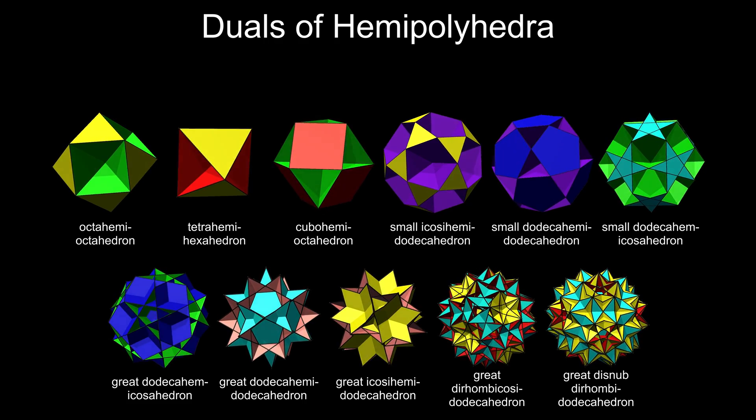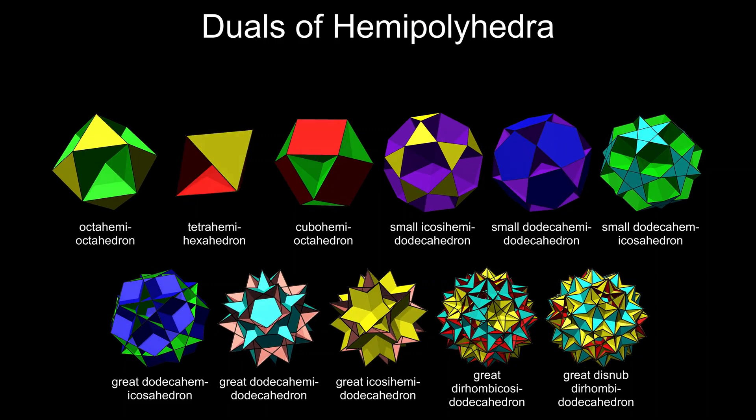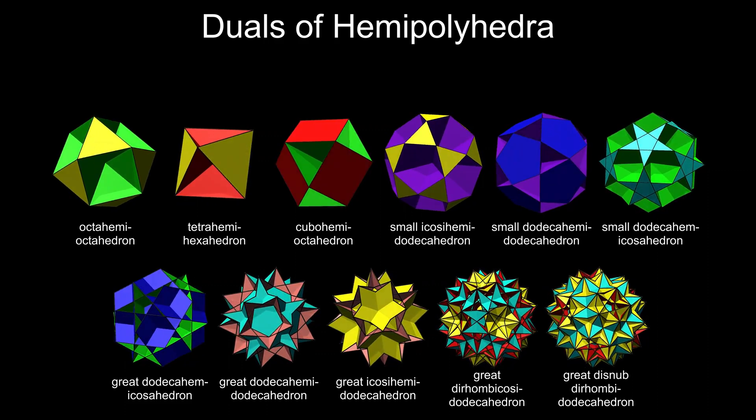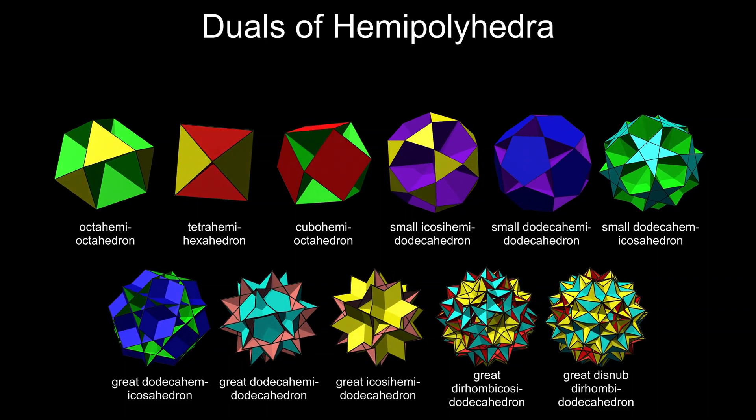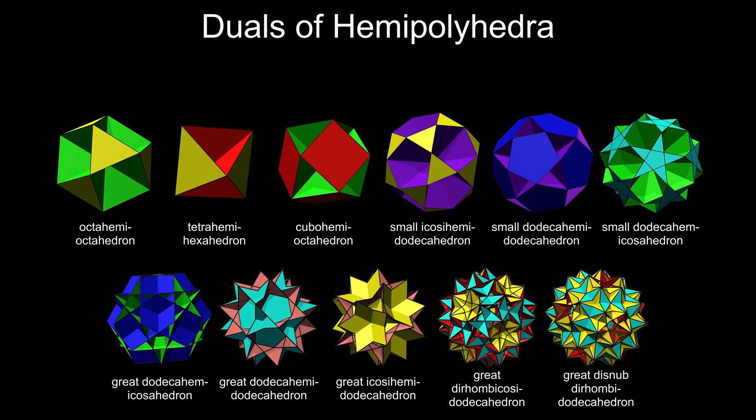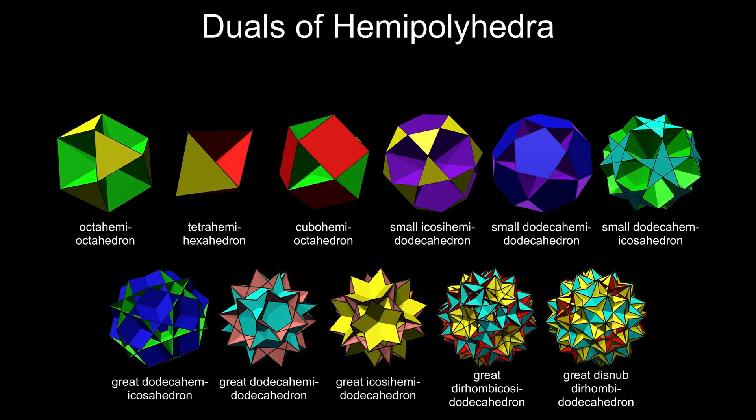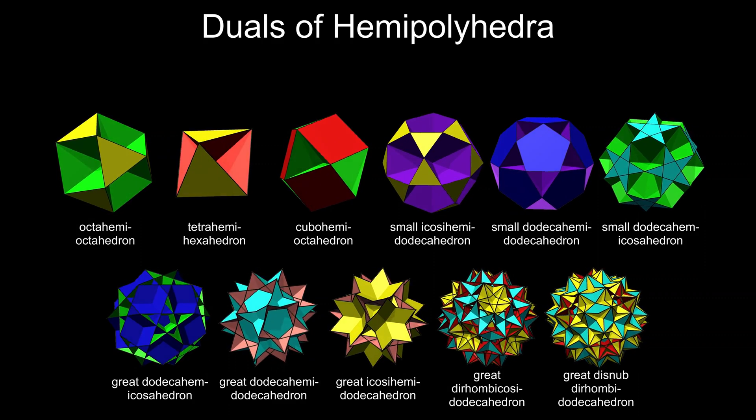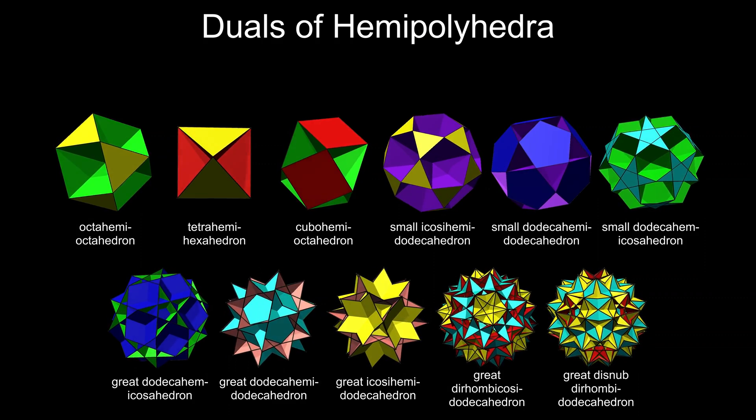This is a follow-up to the recent video on uniform duals. In it I stated that these 11 hemipolyhedra, which have faces passing through the center, do not have duals. However, there are ways around this. This video will discuss two of them.